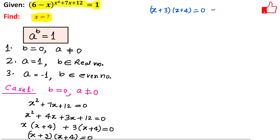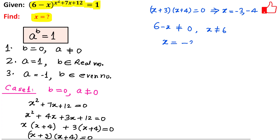This means x equals minus 3 or minus 4. We also check that a is not equal to 0, i.e., 6 minus x is not equal to 0, meaning x is not equal to 6 — which is satisfied. So from Case 1, x equals minus 3 or minus 4.